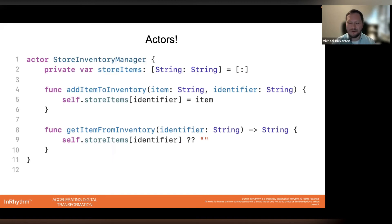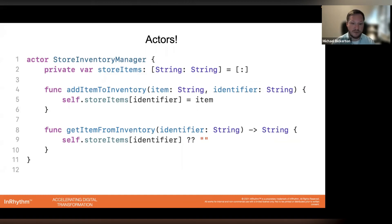However, there's now a better way forward, and that is actors. Actors are a new kind of reference type that you can use with just the actor keyword. If you look again at the example code on screen, we've replaced the class keyword with the actor keyword and removed all the extra code like our dispatch queue that was required previously to make that code thread-safe. With just this one simple swap of a keyword, our class is now automatically thread-safe.